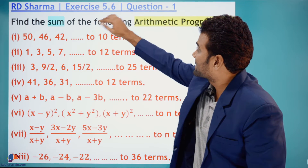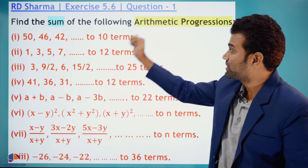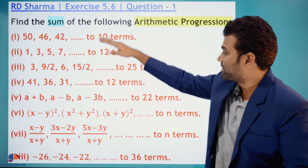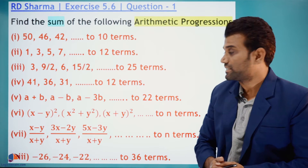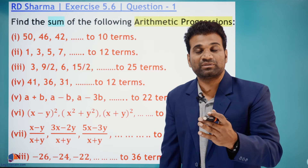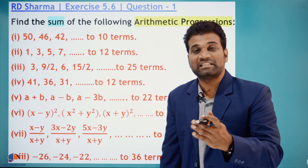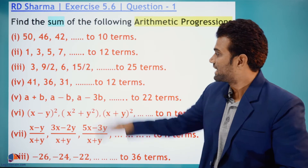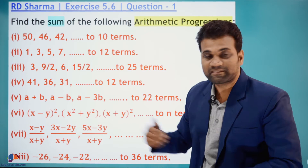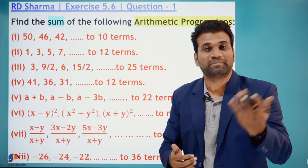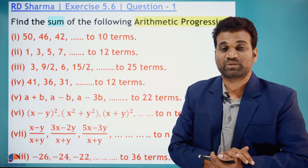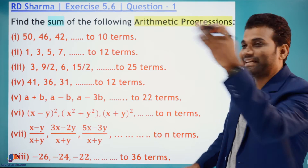Here is our question: RD Sharma Exercise 5.6, Question Number 1 — find the sum of the following arithmetic progressions. We are given different arithmetic sequences at different difficulty levels. You will become expert in finding the sum of n terms of an arithmetic progression for any given sequence. We'll solve them one by one.